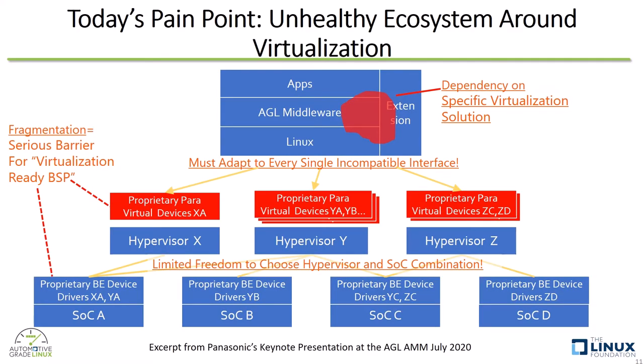Let's look at the current situation first. There are serious pain points around virtualization in automotive — the para-virtual device driver layer and even part of the application platform layer such as AGL depend on both hypervisor and SoC. This is because most current hypervisor solutions have proprietary para-virtual device implementations, and thus have incompatible para-virtual device interfaces for upper-layer software. This is undesirable fragmentation so that OEMs and Tier 1s will not have enough freedom of choice for virtualization solutions.